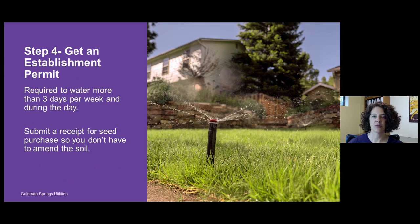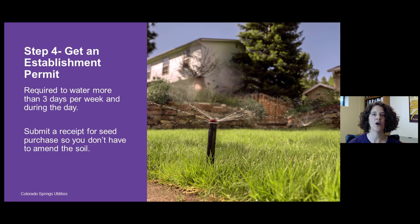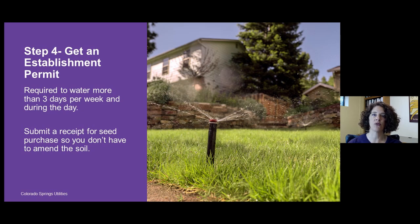Step four is to get an establishment watering permit, which allows you to water more than three days per week and during the day — necessary to get new seed germinated or plugs to grow new roots. Get this permit in place before you plant. For buffalo grass or blue grama, submit a receipt showing what type of native grass seed you purchased; you won't need to show proof of amending the soil with compost.